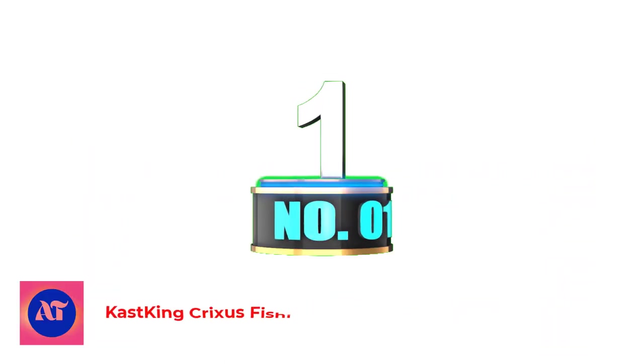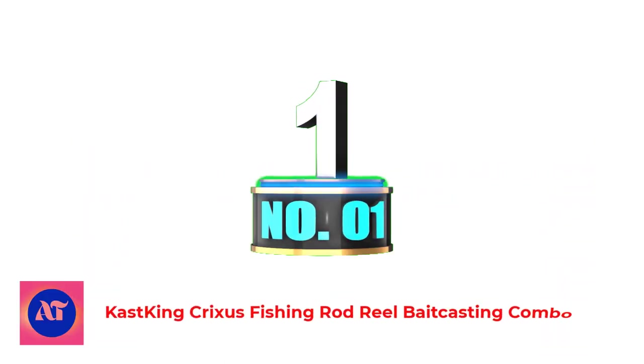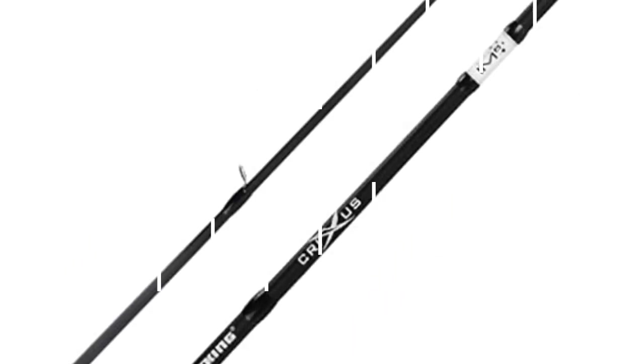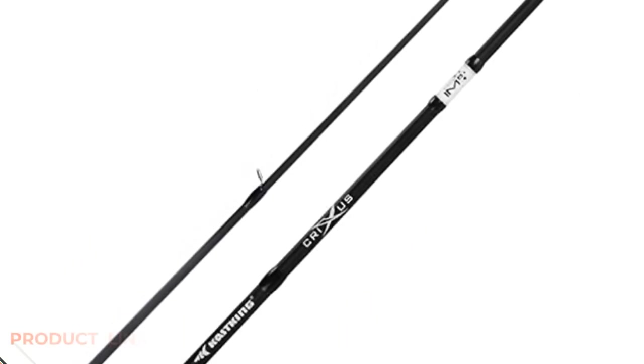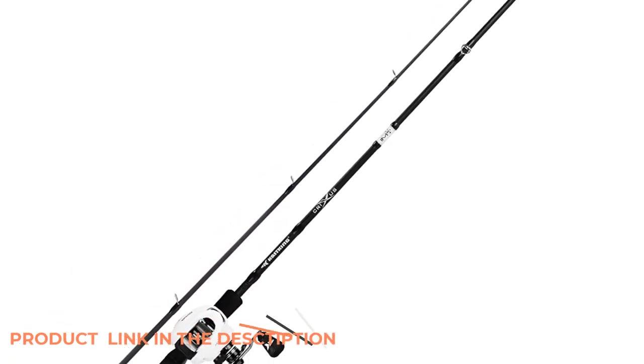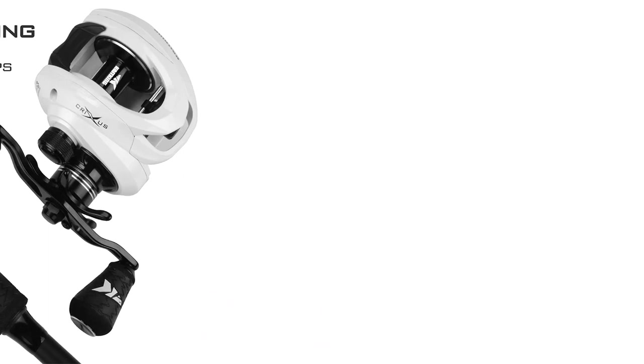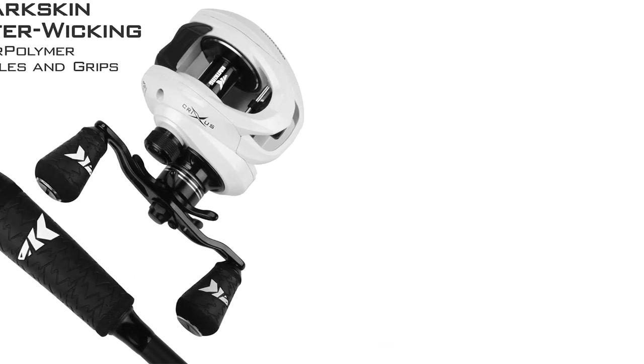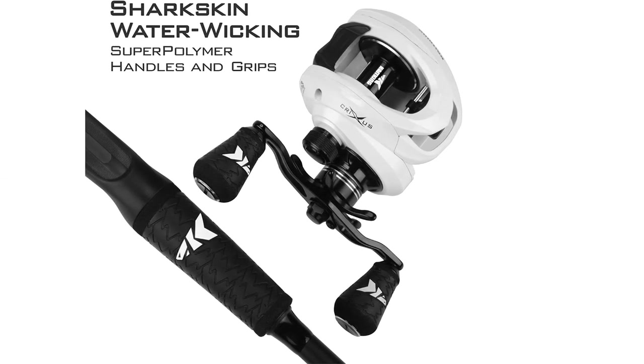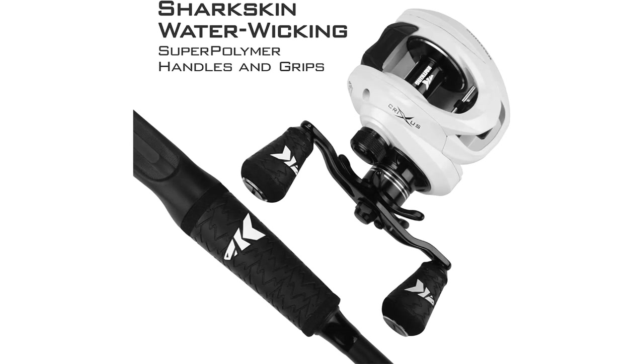Number 1. KastKing Crixus Fishing Rod Reel Baitcasting Combo. Our next option features incredibly light and strong IM6 graphite rod blanks and premium components, with a sharkskin super polymer handle and grips to make your bass fishing experience truly memorable. It is sensitive but very powerful with power ratings to deliver exceptional performance. I've chosen the KastKing Crixus Fishing Rod and Reel Combo because of its unique design and reel components.